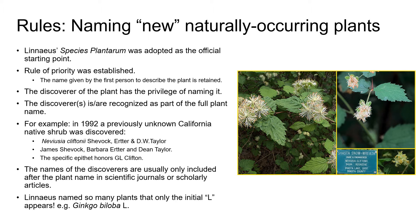The rule of priority meant that the accepted name of a plant would be the first one that was applied. For example, let's say that one person discovered a plant in 1890 and called it by one name, and then somebody else a few years later discovered it again and gave it another name. When it's realized that the two plants are actually the same species, the rule of priority dictates that the first name that was published is the one that's retained and becomes the accepted name for the species.